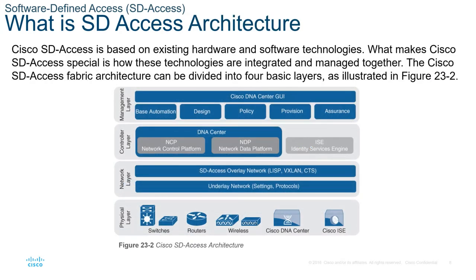The Cisco Digital Network Architecture or Cisco DNA is Cisco's architecture for enterprise networks across the campus, branch, wide area network, and extended enterprise. It provides an open, extensible, and software-driven approach that makes the network simpler to manage and more agile and responsive to business needs. The Cisco DNA Center centrally manages major configurations and operations workflow areas.